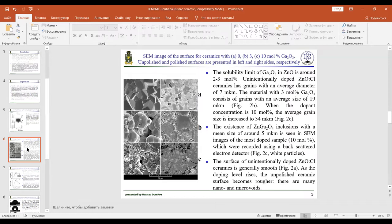The existence of zinc gallium oxide inclusions with a mean size of around five micrometers is seen in the image of the most doped sample at 10 mole percent, which were recorded using a backscattered electron detector.